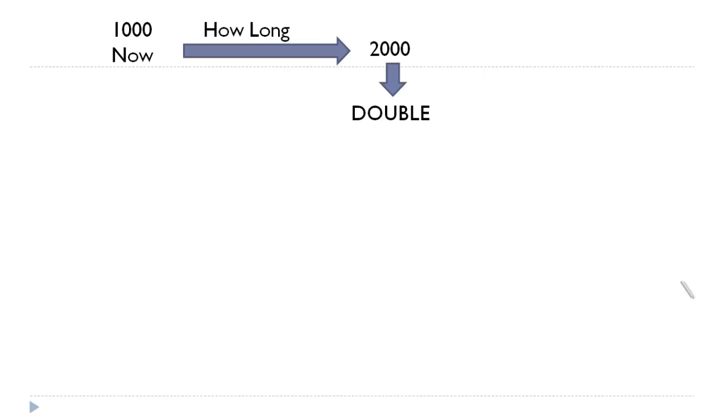For that, we have to follow something called the Rule of 72. This Rule of 72 is basically a thumb rule, not rocket science. What it says is you have to divide 72 by the rate of interest.